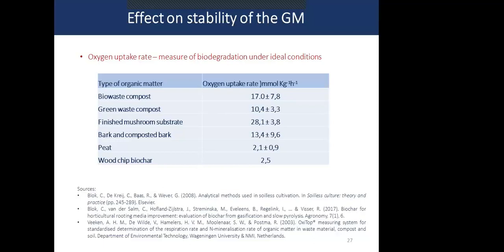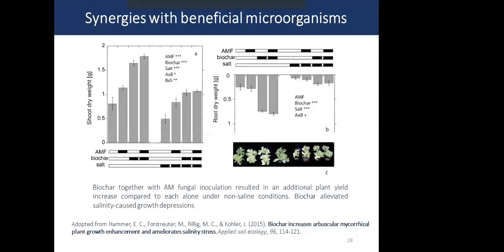A study showed how arbuscular mycorrhizal fungi presence in a biochar-amended medium performs under salt stress conditions. Biochar together with arbuscular mycorrhizal fungi, in combination with certain additions, increased plant yield especially under non-saline conditions. Biochar elevated the salinity-stress growth depression, meaning biochar can be used to mitigate salinity-related growth reductions and has a positive synergistic effect with beneficial microorganisms.